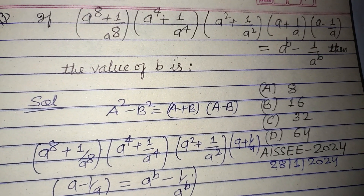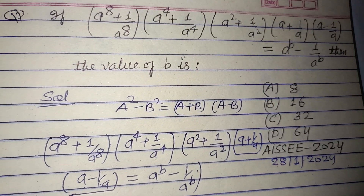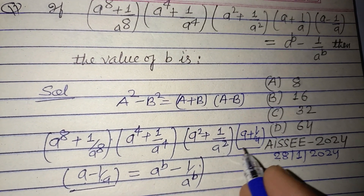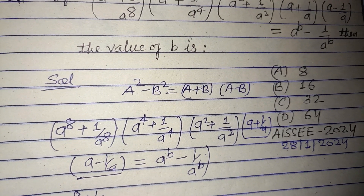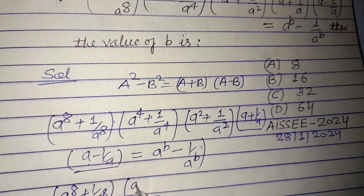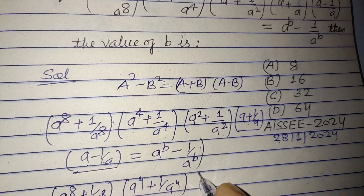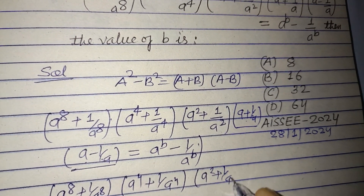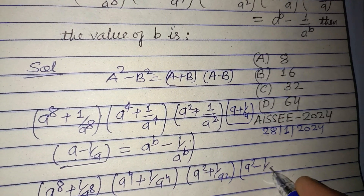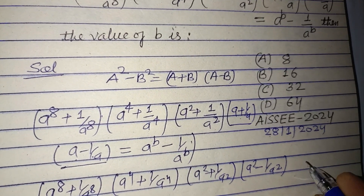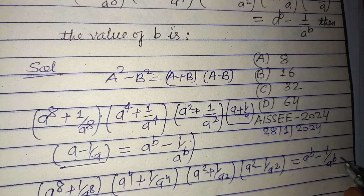First, we take (a + 1/a)(a - 1/a) — these are in the form (a + b)(a - b) — so they become a² - 1/a². The remaining terms are (a^8 + 1/a^8), (a^4 + 1/a^4), (a² + 1/a²), giving us a^b - 1/a^b.